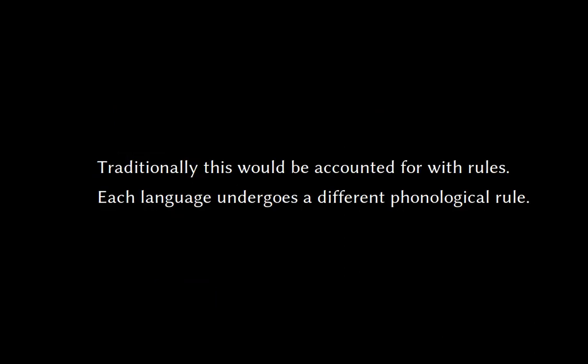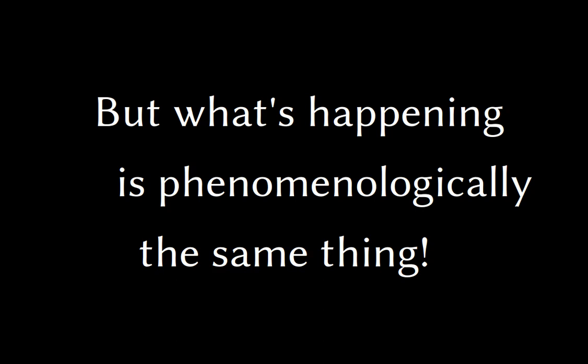Traditionally in a rule-based account of phonological change, each language basically performed a different sound change on its morphological inventory. So speakers of Spanish would have a morphological rule saying we lose B in this situation but not in this one; Romanian would have one that universally loses it and coalesces vowels; Italian would have another. But that's a little strange because what's going on is phenomenologically the same thing. It's weird to model formally similar sound changes occurring across the Romance Sprachbund as totally different animals. It would be nice to have one unified account.